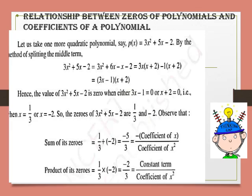Now factorize it. The factors of the polynomial by splitting the middle term are (3x minus 1) and (x plus 2). We have to write either 3x minus 1 equals 0 or x plus 2 equals 0. Then we get x equals 1 by 3 or x equals minus 2. So the zeros are 1 upon 3 and minus 2. A quadratic polynomial means 2 zeros.